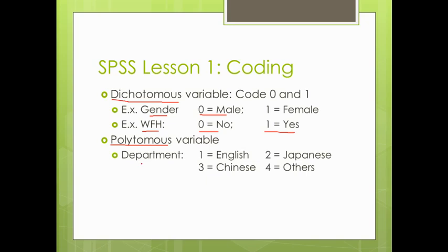For example, you might want to survey students in your university and you ask them one question: which department do you belong to? And you provide the option English department, Japanese department, Chinese department, and other departments.